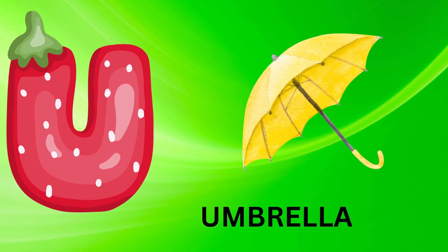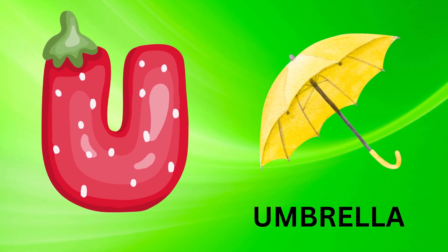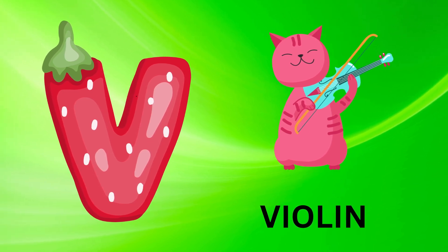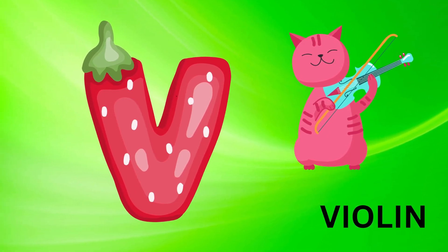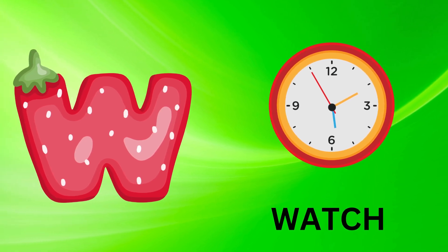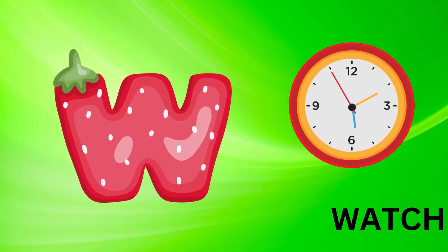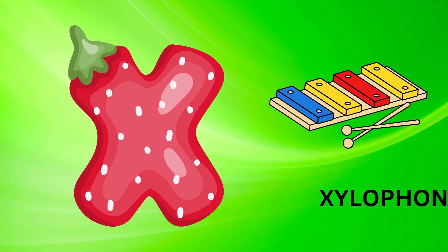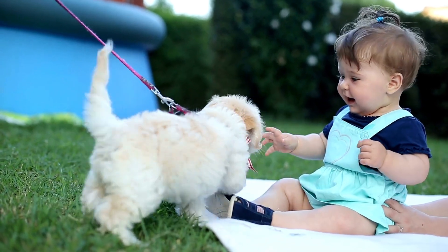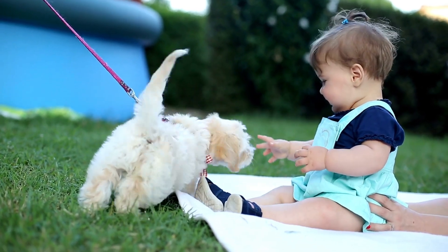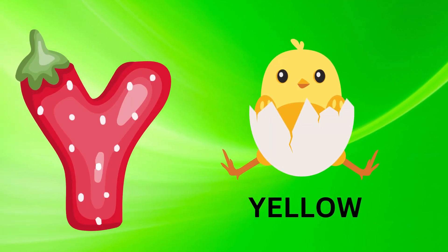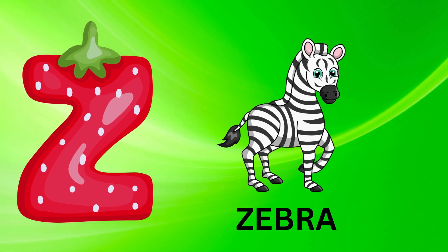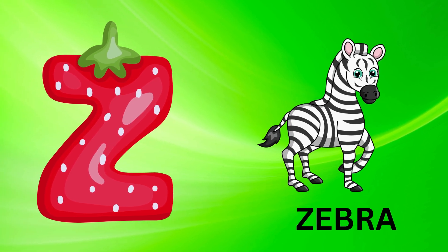U is for umbrella, u-u-umbrella. V is for violin, v-v-violin. W is for watch, w-w-watch. X is for xylophone, z-z-xylophone. Y is for yellow, ye-ye-yellow. Z is for zebra, z-z-zebra.